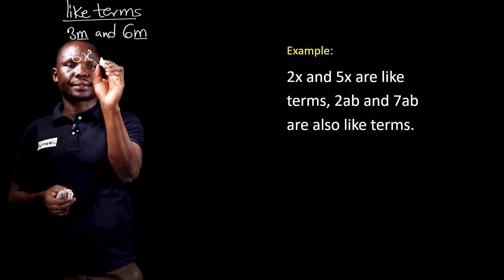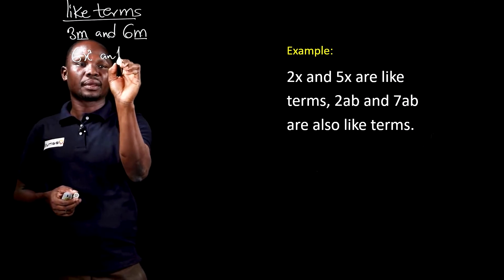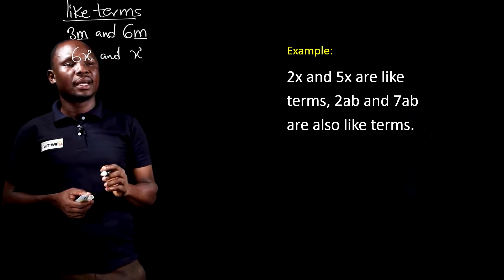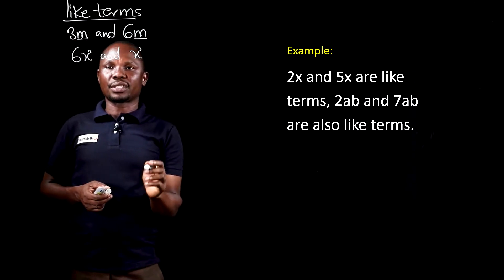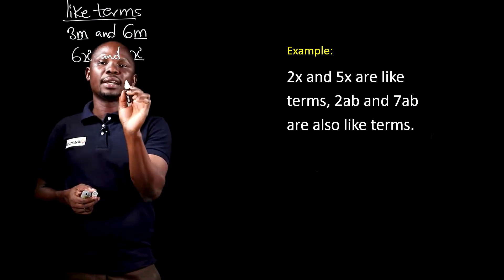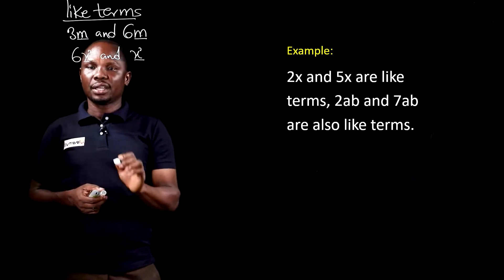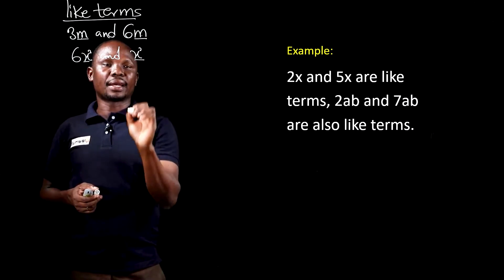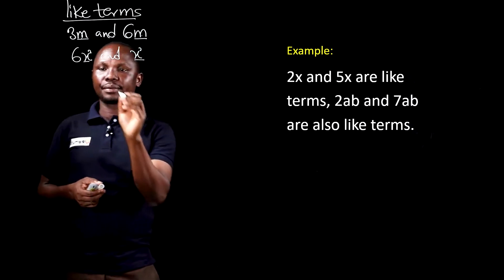6x squared and x squared are also like terms because the variables are the same — x and x — and they also have the same powers. So, 6x squared and x squared are like terms.